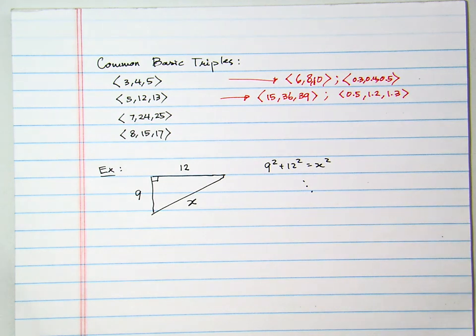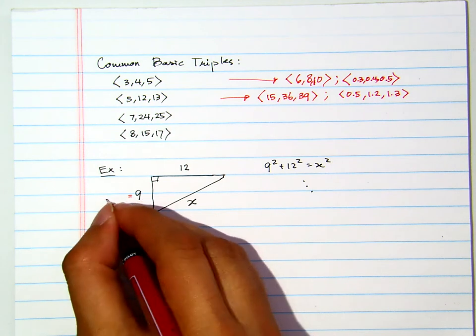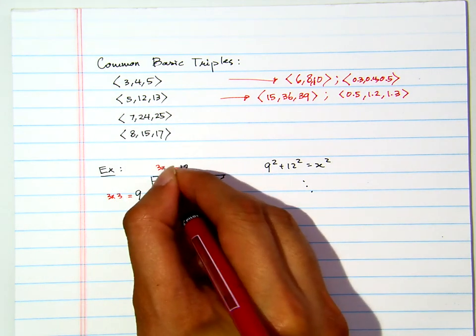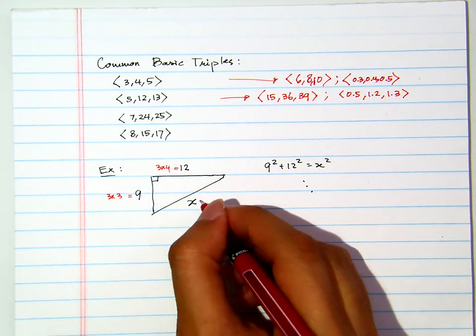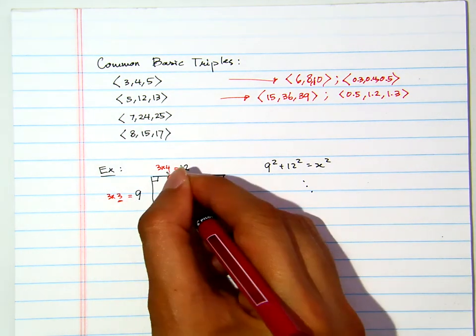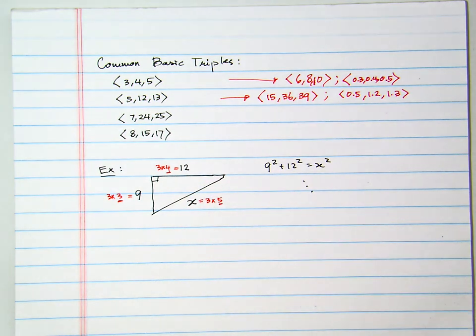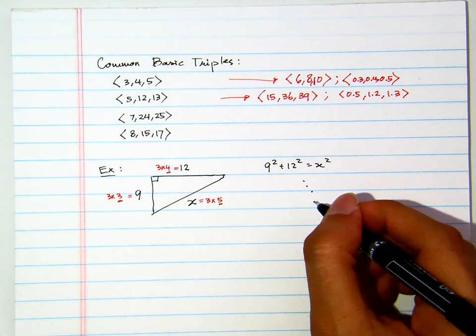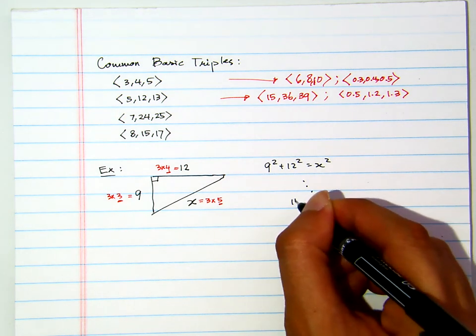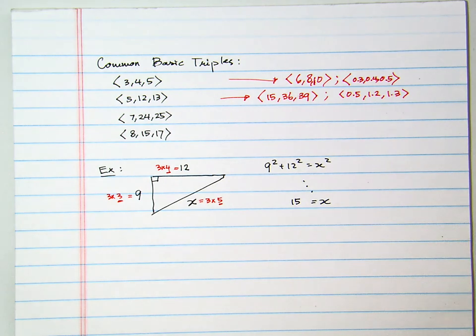But another way to see it is this. You see that, oh, this is three times three. This is three times four. So, the one here must be three times five. The three, four, five triple. You see what I mean? So, we do expect that later on, we will see that x equals to fifteen.